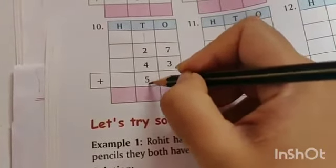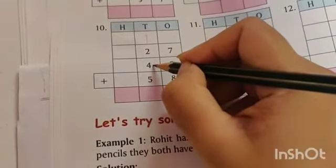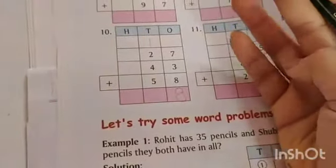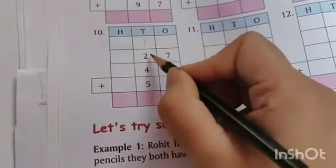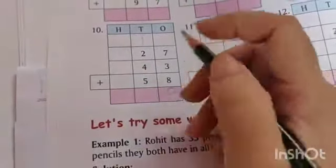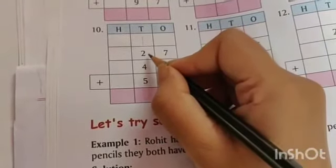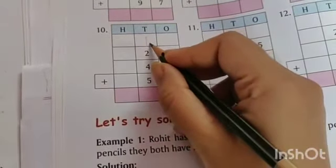In tens column: 1, 2, 4, and 5. 5 plus 4 is 9. 9 plus 2, add with your fingers: 9, 10, 11. And 11 plus 1 is 12.